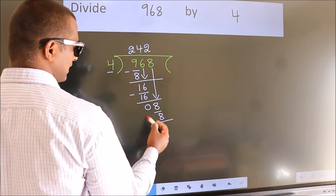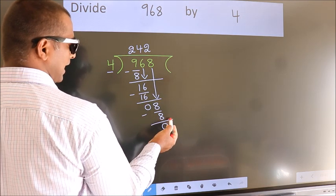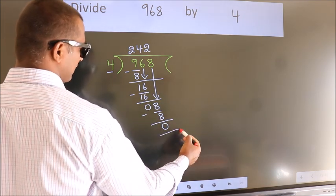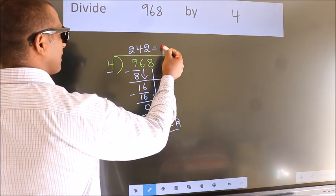Now, we subtract. We get 0. No more numbers to bring it down. So, we stop here. This is our remainder. This is our quotient.